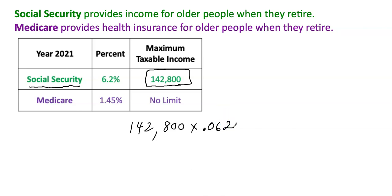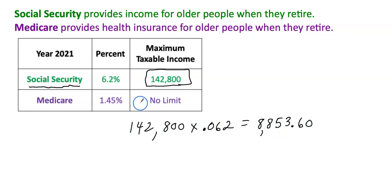How much would someone pay for Social Security if they made exactly the maximum taxable income? You take $142,800 times 0.062, which equals $8,853.60. This is the maximum Social Security tax somebody can pay, because once you go over that income amount you are no longer taxed.